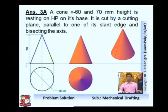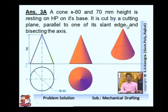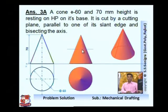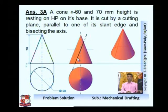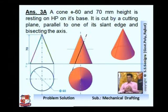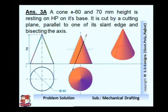It is given that it is cut by a cutting plane parallel to one of its slant edges and bisecting the axis. So we have to draw a cutting plane in such a way that it bisects this axis. From this midpoint a cutting plane passes and it is parallel to this slant edge. From the midpoint, draw a horizontal line and mark the midpoint of the axis. From this point draw a line which is parallel to its slant edge. If the cone is cut like this, what should be its top view, sectional top view, true shape, and development — that is our objective.